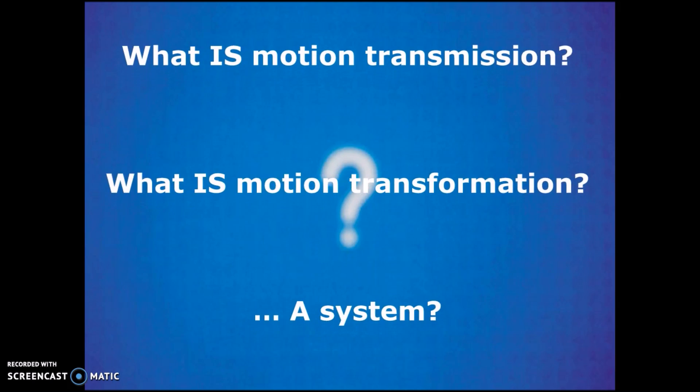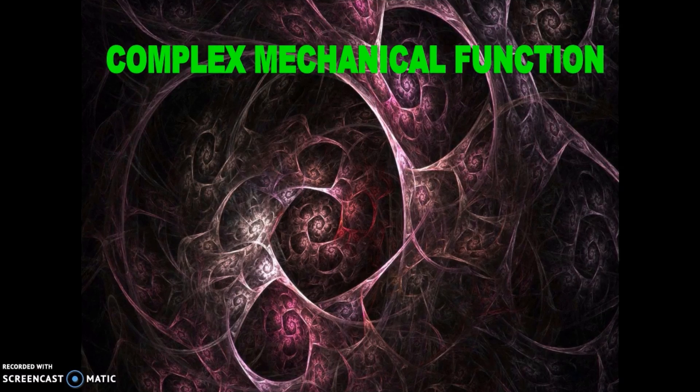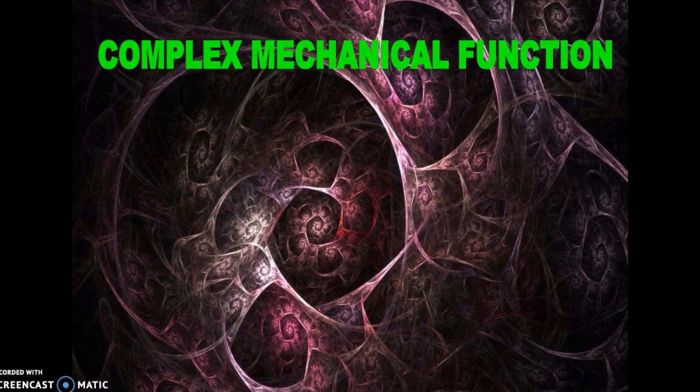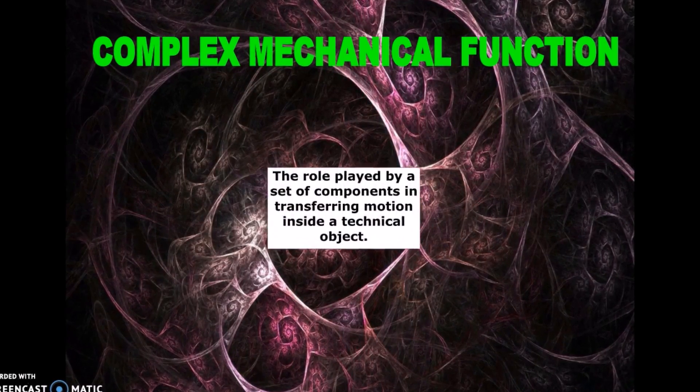Now first of all, what is motion transmission, motion transformation, and ultimately a system? Complex mechanical function is a role played by a set of components in transferring motion inside a technical object. This can either refer to transmitting motion or transforming motion.